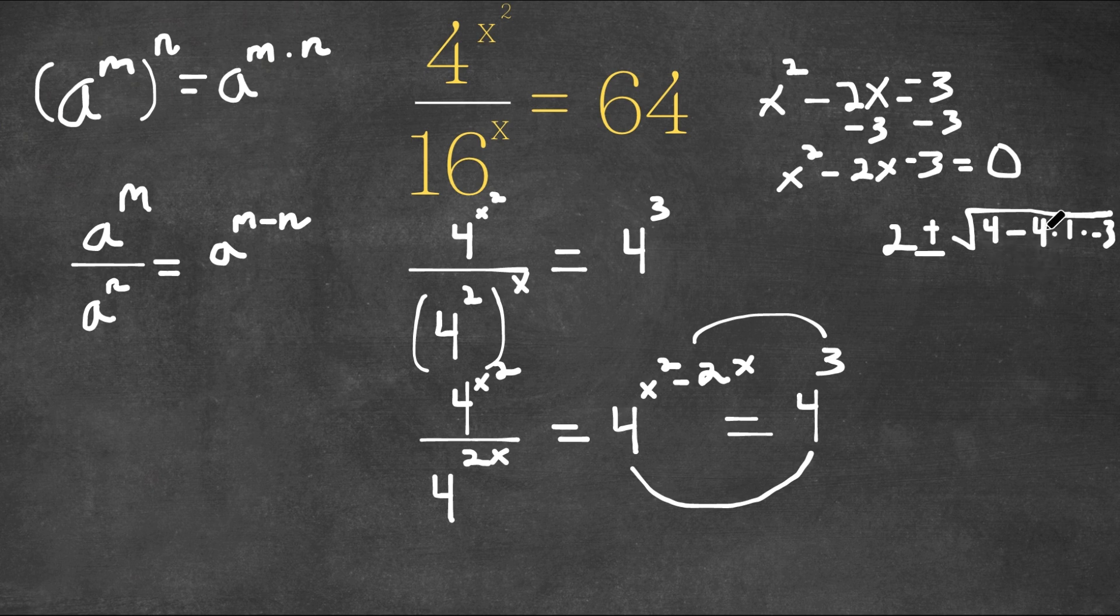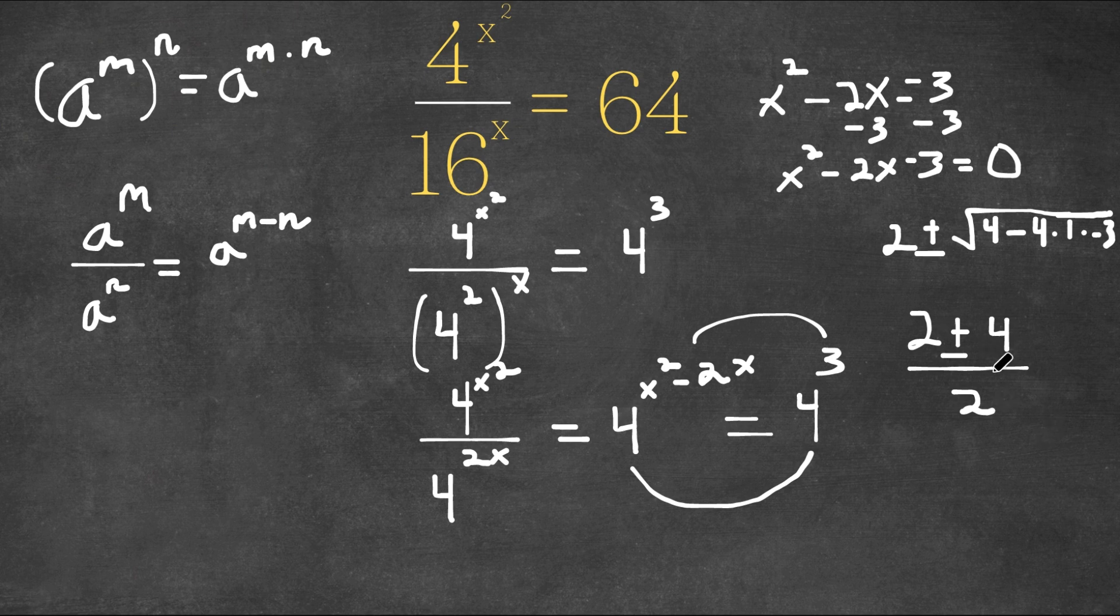Now, negative 4 times 1 is negative 4 and negative 4 times negative 3 is positive 12. So we have 4 plus 12, which is 16. And the square root of 16 is 4. So we have 2 plus or minus 4. And we are going to divide this by 2a. So a is 1. So we're dividing this by 2 times 1, which is 2.